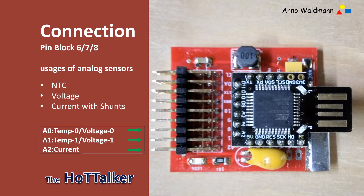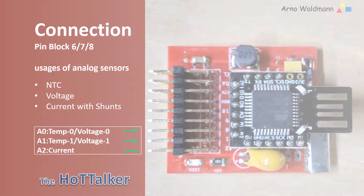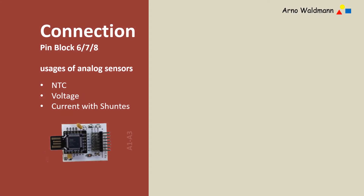The last three pin blocks 6, 7, and 8 are for sensors that need an analog-to-digital converter. As examples, NTC temperature sensors and voltage dividers should be mentioned. Finally, four analog sensors that have proven themselves in practice are given as examples.